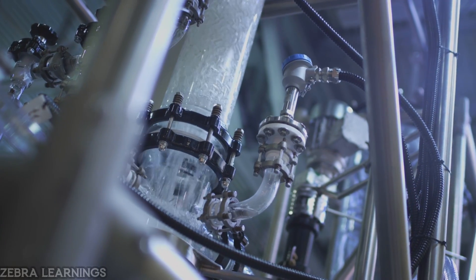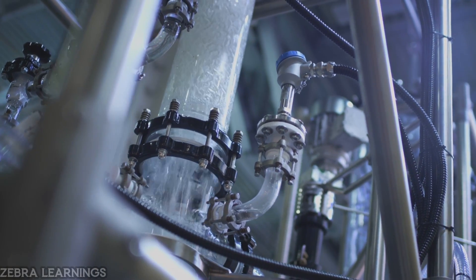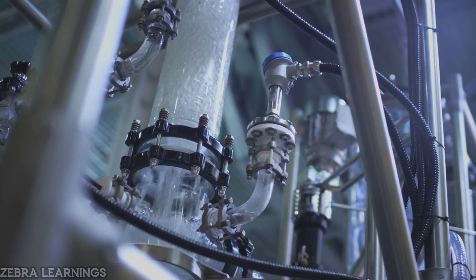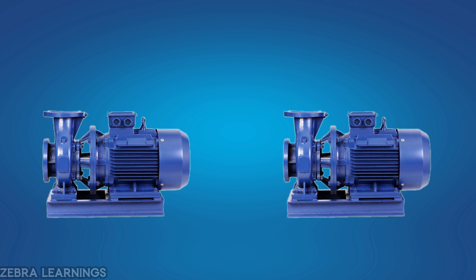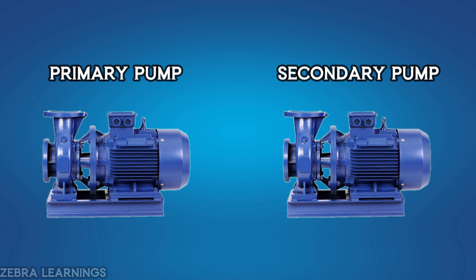In a building, we use water in the chiller plant to remove heat. We use a pump to send this water from the chiller to the AHU in the building. We use two types of pumps in the chiller plant: one is the primary pump and the other is the secondary pump. We will learn about these two pumps in this video.